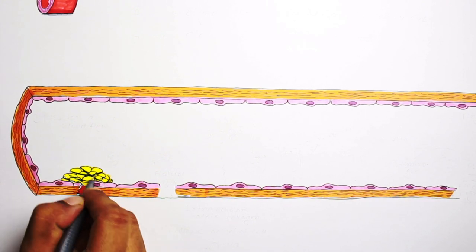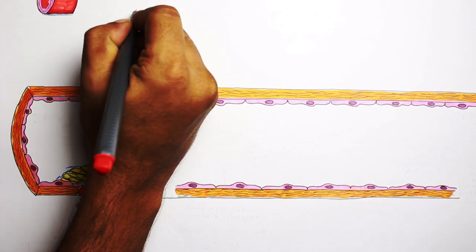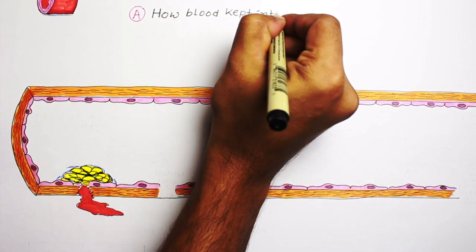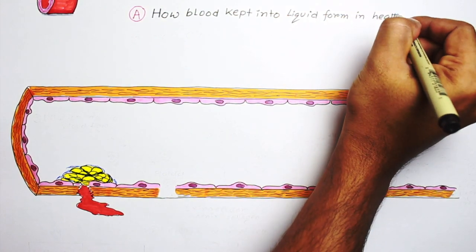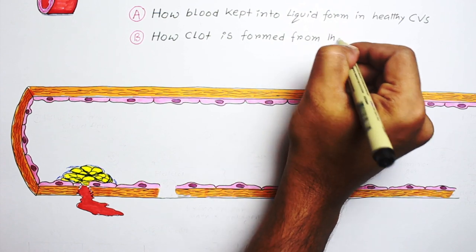So we need to know two important things. First, how blood is kept in liquid form in a healthy cardiovascular system, and second, how a plug is formed from the blood constituents.